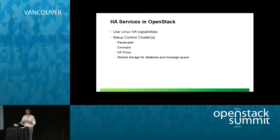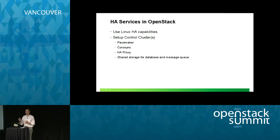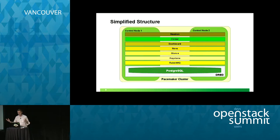If your control node goes down, pretty much your cloud goes down. In the first releases of OpenStack that was not too painful — your VMs would typically stay up. But now if you're deploying Neutron, potentially you lose your control node, Neutron goes down, and your VMs lose all connectivity. And if you've got 10,000 VMs out there running and all of a sudden they disappear, your customers might want to know why.